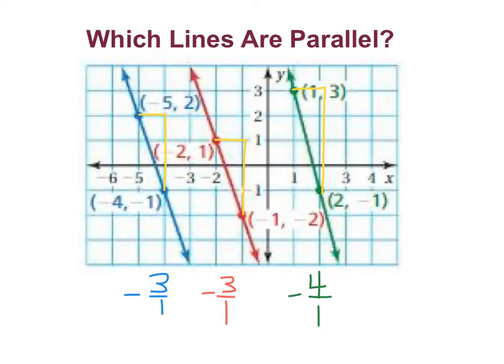Now normally when we have 1 in the denominator, we just drop it. So the first one would be a slope of negative 3, the second would be a slope of negative 3, and the third would be a slope of negative 4. So the ones that are parallel are the first and the second—the blue and the red—but not the green.